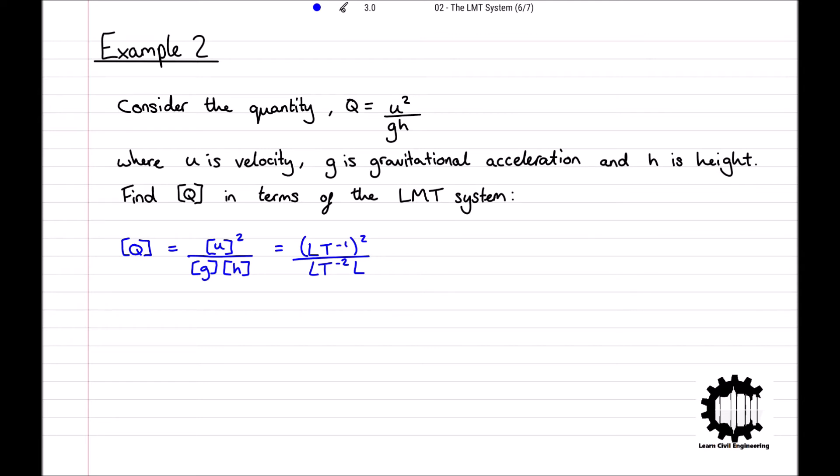Substituting these into the equations above, and then simplifying the expression, we find that the dimensions for Q are equal to L squared T to the power of minus 2 divided by L squared T to the power of minus 2, which cancels out to equal 1. This means that Q is dimensionless and therefore has no units.